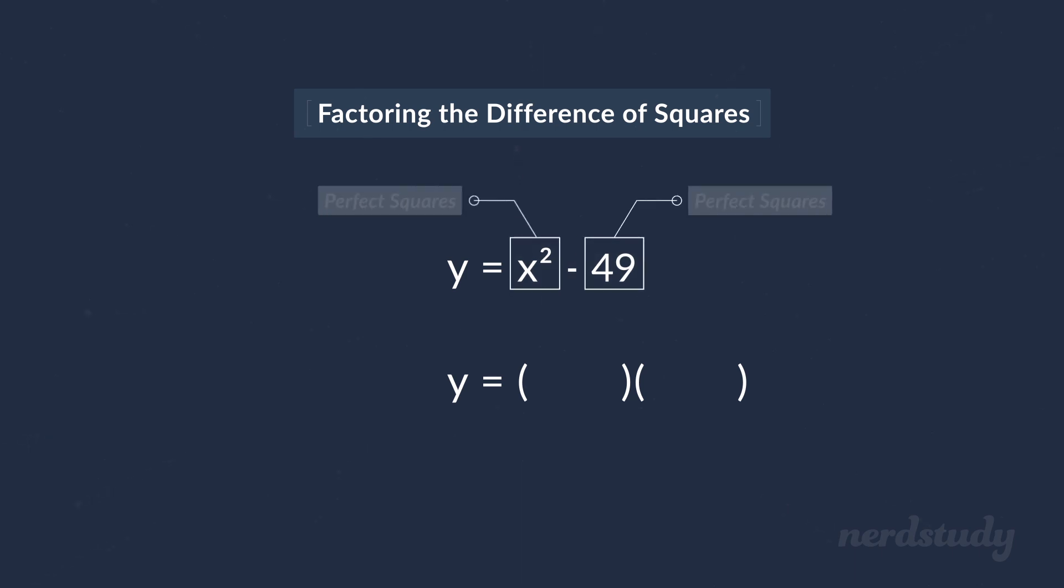So, since these two terms are perfect squares that are being subtracted with each other, we can use what we just learned and find the conjugates of them. We now know that we can factor this out which results in x plus 7 multiplied by x minus 7.